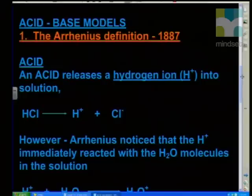So what is an acid? Well, an acid, according to our first definition, which was represented by a Swedish scientist by the name of Svante Arrhenius in 1887, becomes known as the Arrhenius definition.